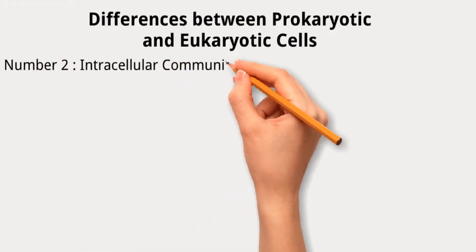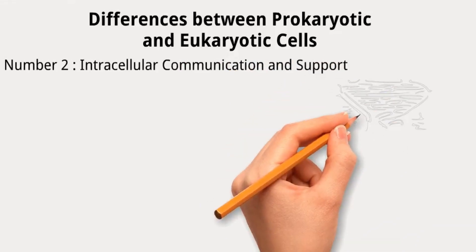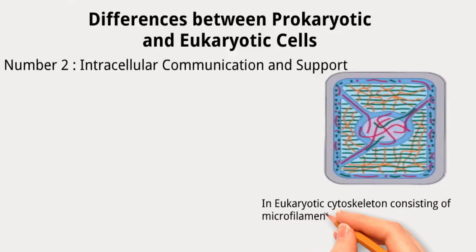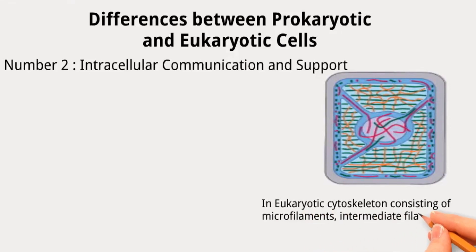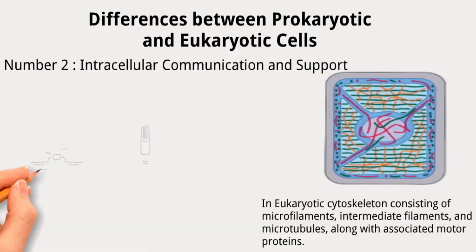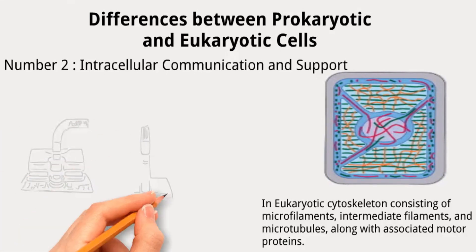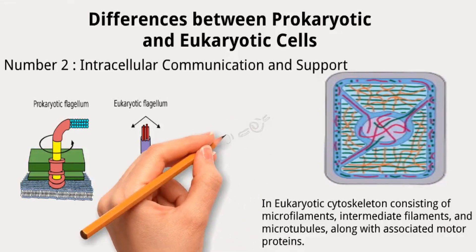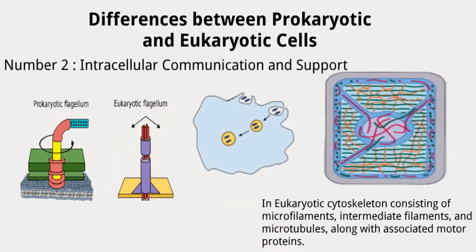Number two: intracellular communication and support. Eukaryotic cells possess a complex cytoskeleton consisting of microfilaments, intermediate filaments, and microtubules, along with associated motor proteins. Both cell types can have complex flagella and cilia, although those in eukaryotes are more intricate. Eukaryotic cells are also capable of phagocytosis, allowing them to ingest particulate material by enclosing it within plasma membrane vesicles.